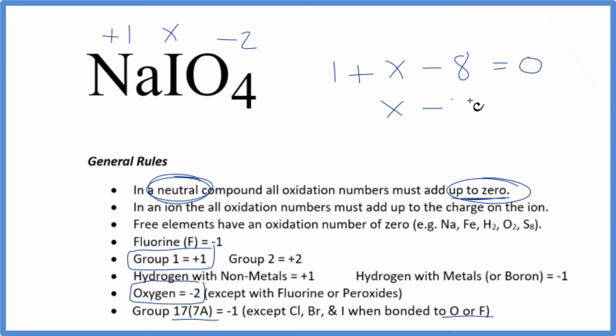X minus seven equals zero. Add seven to both sides. X equals a positive seven. So the oxidation number on the iodine here in NaIO4 is plus seven.